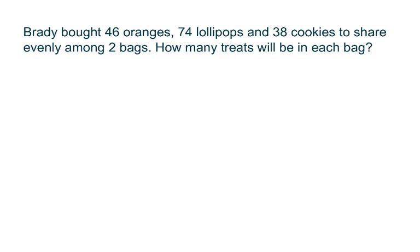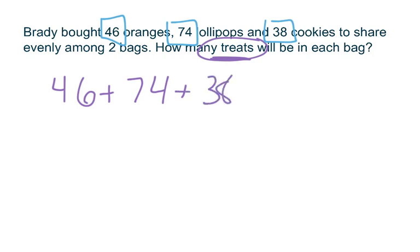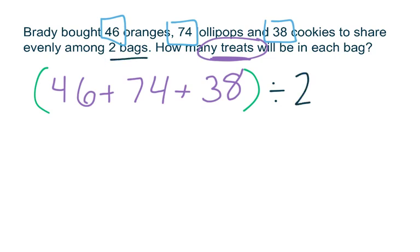Our next problem says Brady bought 46 oranges, 74 lollipops, and 38 cookies to share evenly among two bags. How many treats will be in each bag? The first thing I need to do to solve this problem is find my total. I don't have a total right now. I have 46 oranges, 74 lollipops, and 38 cookies, and I need to find my total number of treats. In order to do that I need to add. I'm going to add 46 plus 74 plus 38, and that's going to give me my total number of treats. I can't divide anything until I find my total. Once I find my total, then I have to divide by two because he's placing treats in two bags.